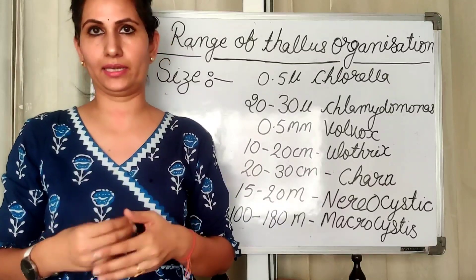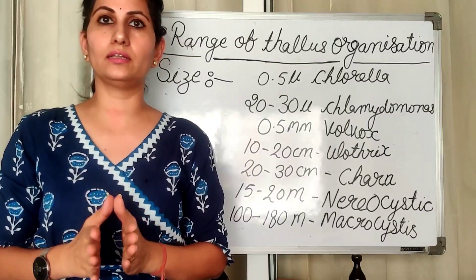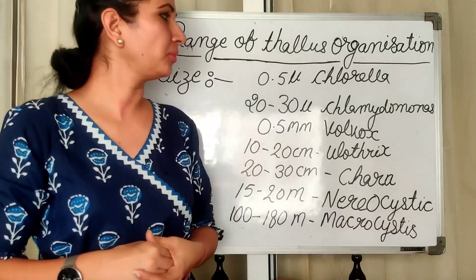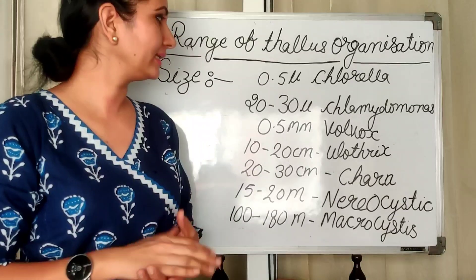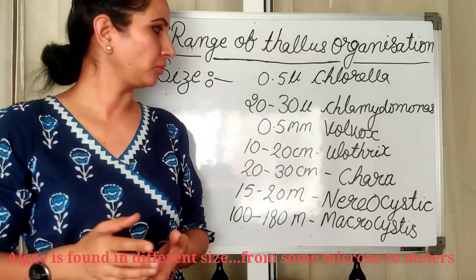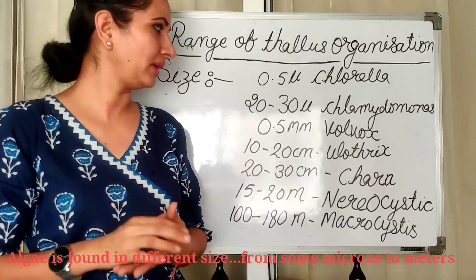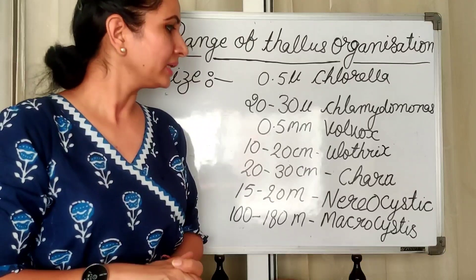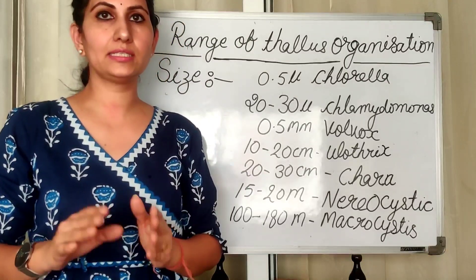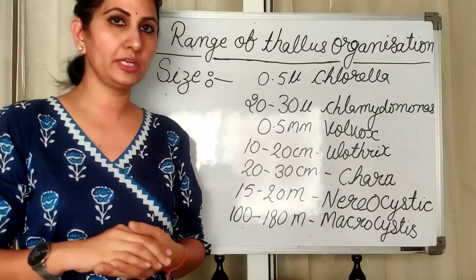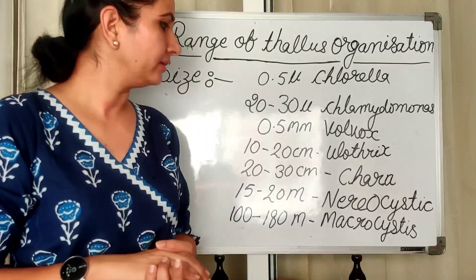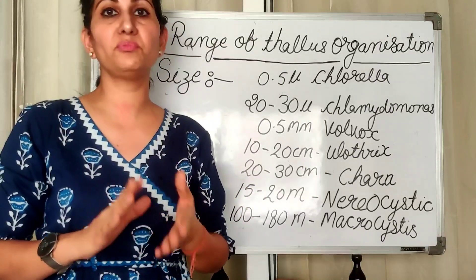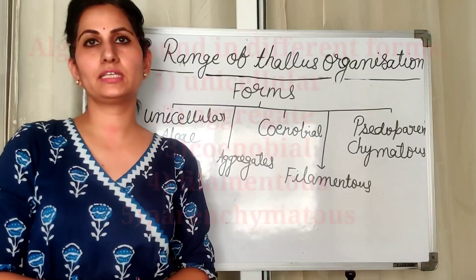Let's talk about the size of algae. Chlorella is 0.5 micron, which is very small. Chlamydomonas is 20 to 30 microns. Volvox is 0.5 mm. Ulothrix is 10 to 20 centimeters. Chara is 20 to 30 centimeters. Nereocystis is 15 to 20 meters, which is very large. Macrocystis is found at 100 to 180 meters in size.